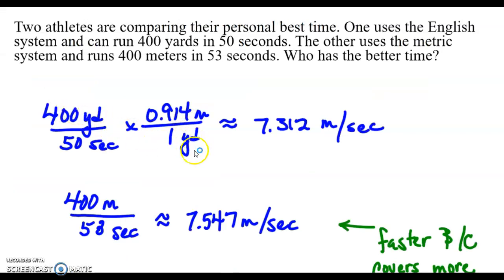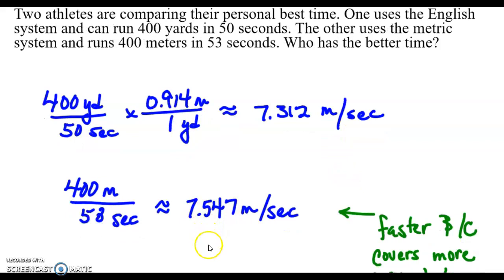Working that out, I got 7.312 meters per second. Then the 400 meters for 53 seconds, we can do the division problem with our calculator and turn that into 7.547 meters per one second. Comparing these, at first you might think the first guy is actually better because it's smaller, a lower time. But what we have to think about is how much ground are they covering. The second runner is actually covering more ground each second than the first runner. So the 400 meters per 53 seconds is a better time than 400 yards for 50 seconds.